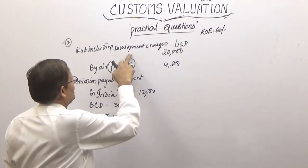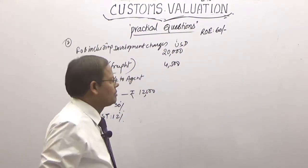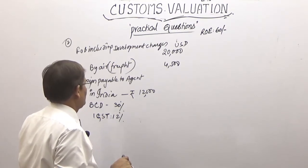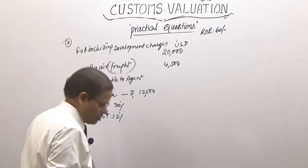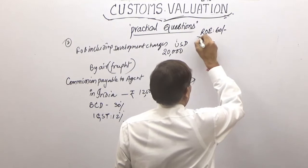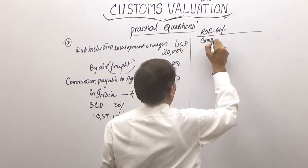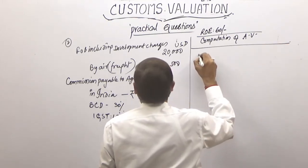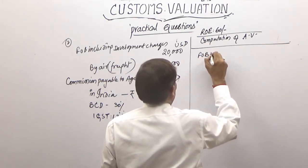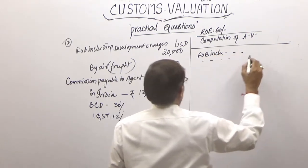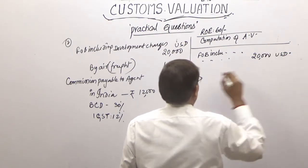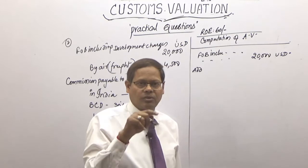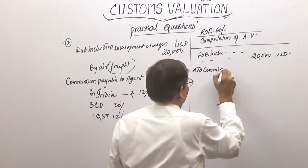The FOB including development charges is altogether $20,000 — we don't add anything extra. Now for the computation of assessable value: FOB including development charges is $20,000. We also need to add commission. This is not a buying commission because they did not mention it as a buying commission, so I treat it as the agent of the exporter.